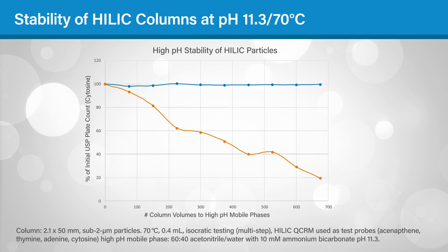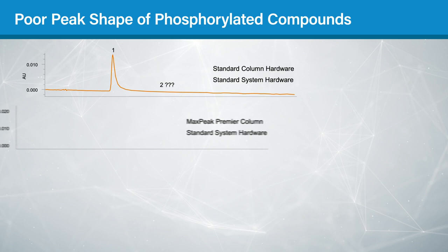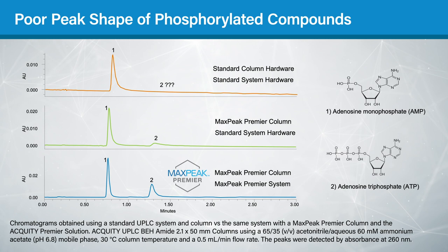One other challenge in HILIC method development, particularly in the analysis of metal-sensitive compounds, is poor peak shape due to interactions with the metal surfaces in both the LC system and the column.